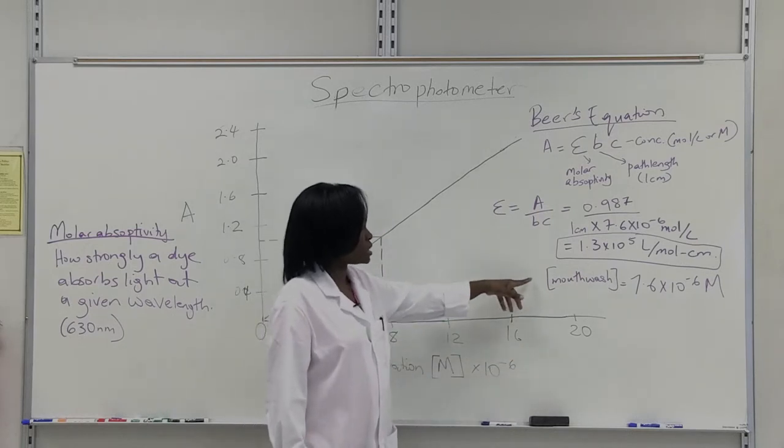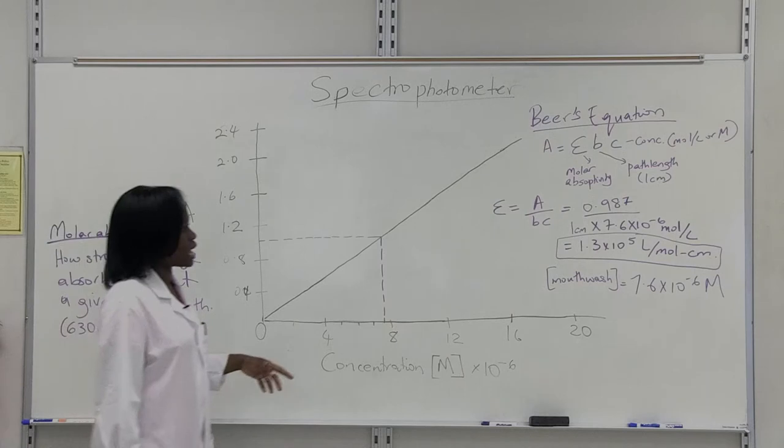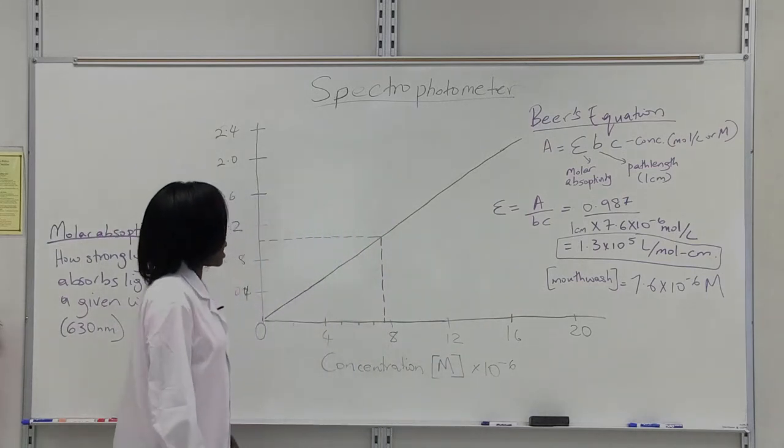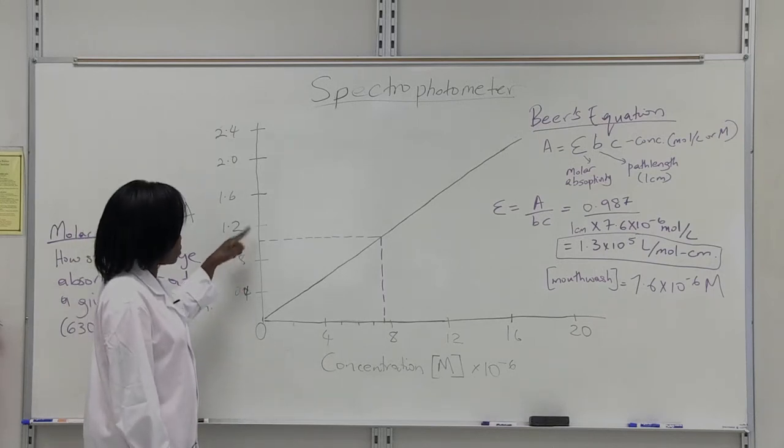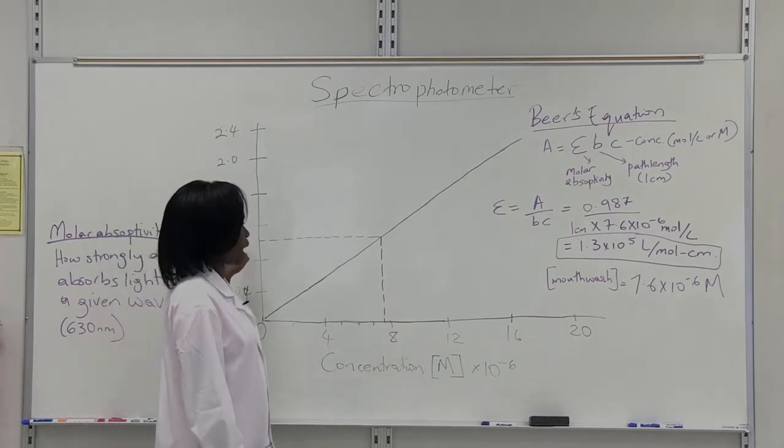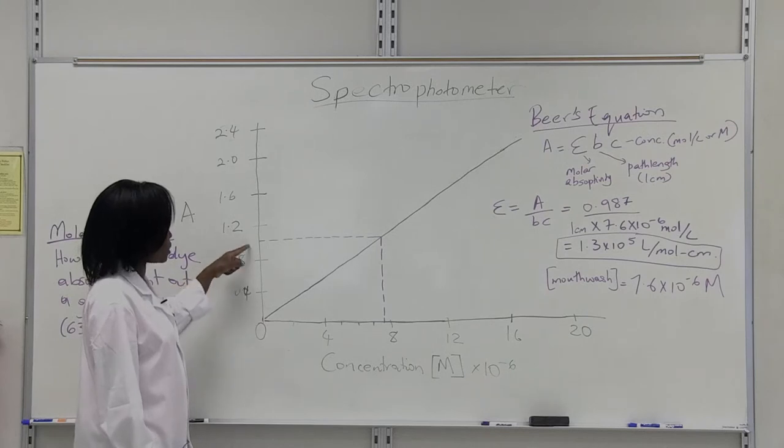because mouthwash has brilliant blue dye in it. So you can measure the absorbance of your mouthwash using the spectrophotometer. And then you go on your y-axis and you determine where your absorbance is. So I had gotten 0.987 as my absorbance for the mouthwash.